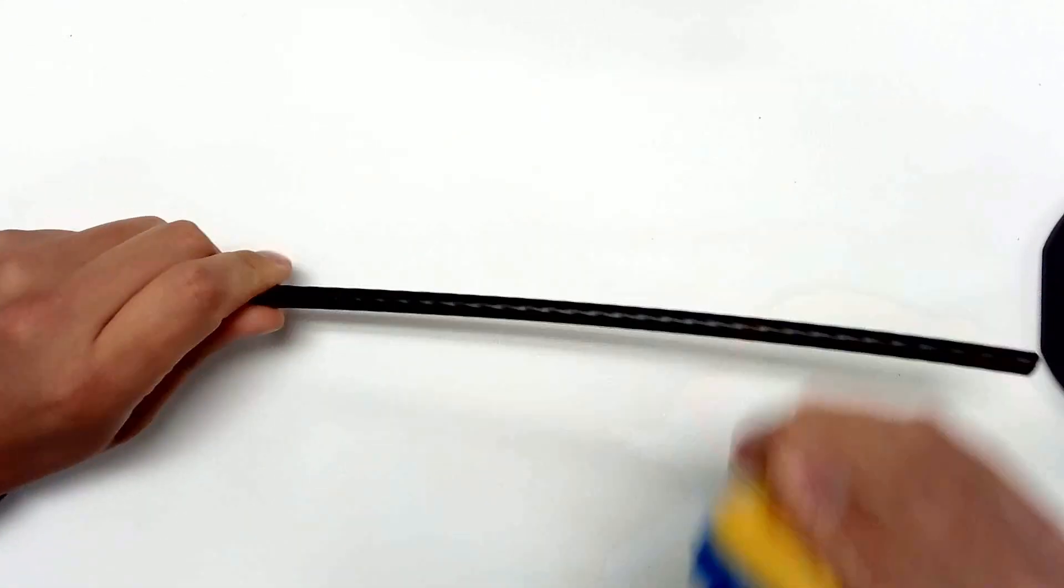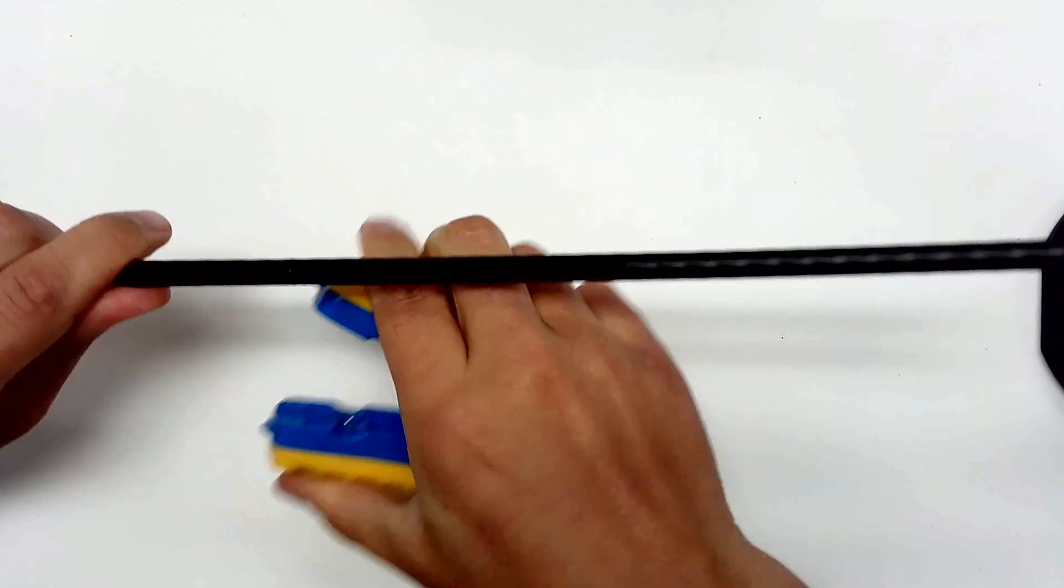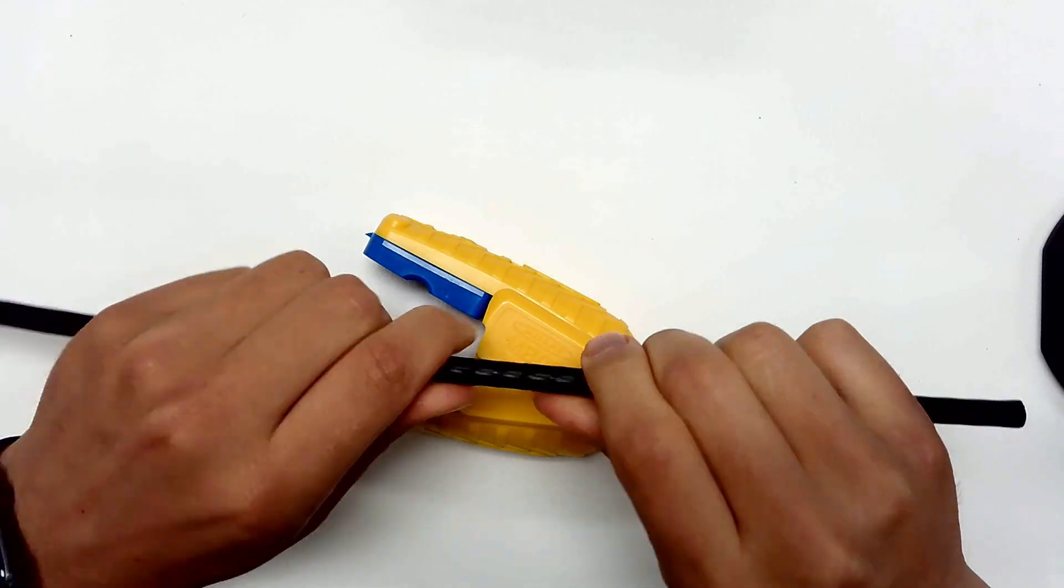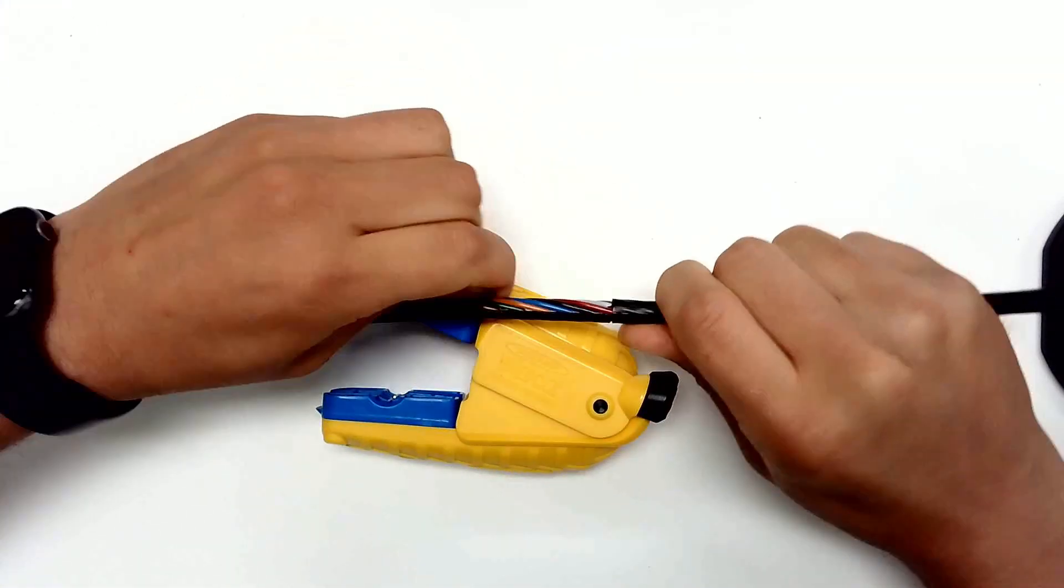The spring-loaded chassis allows you to quickly switch between operations. The dual cutting action only requires a half revolution on the ring cut, and precise dual longitudinal slitting action makes for quick action to break into any cable.